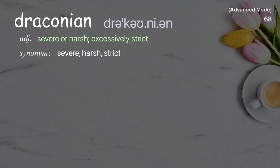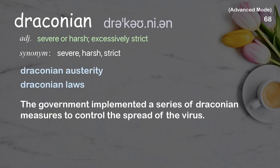Draconian: Severe or harsh; excessively strict. Examples: Draconian austerity. Draconian laws. The government implemented a series of draconian measures to control the spread of the virus.